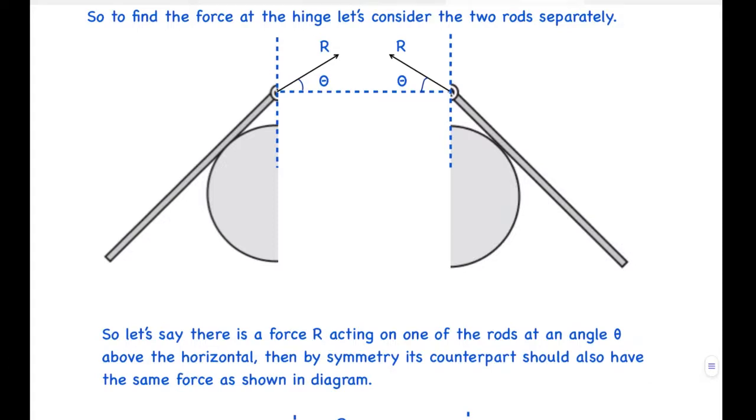Let's consider the two rods separately. Let's say there's a force R acting on one of the rods at an angle theta above the horizontal. Then by symmetry, its counterpart, this rod, should also have the same force as shown in the diagram. Due to symmetry, it will also be at an angle theta above the horizontal.